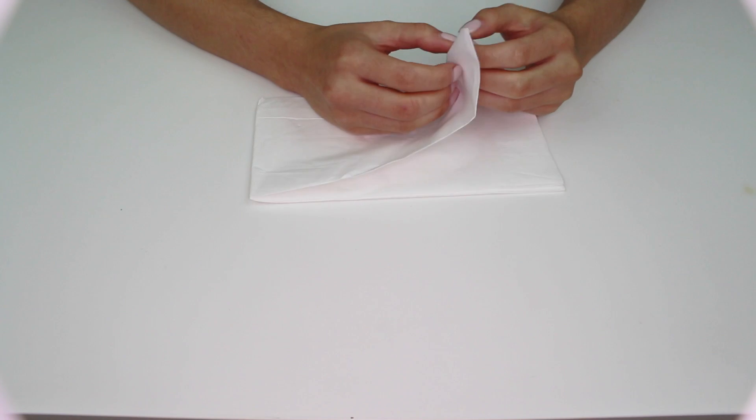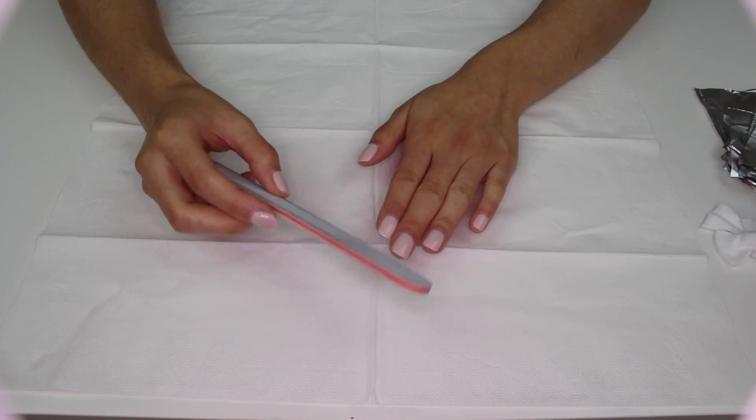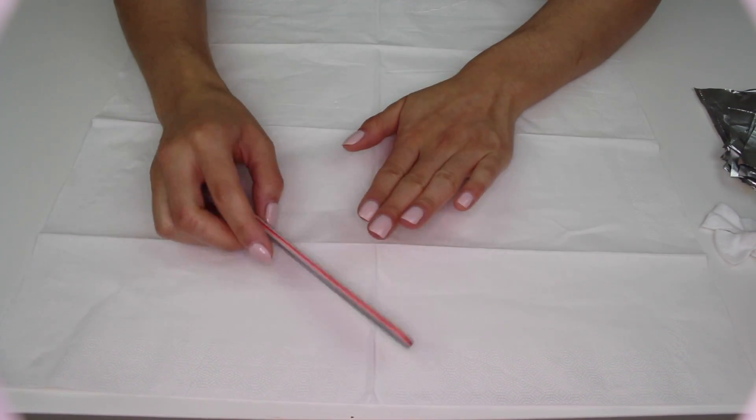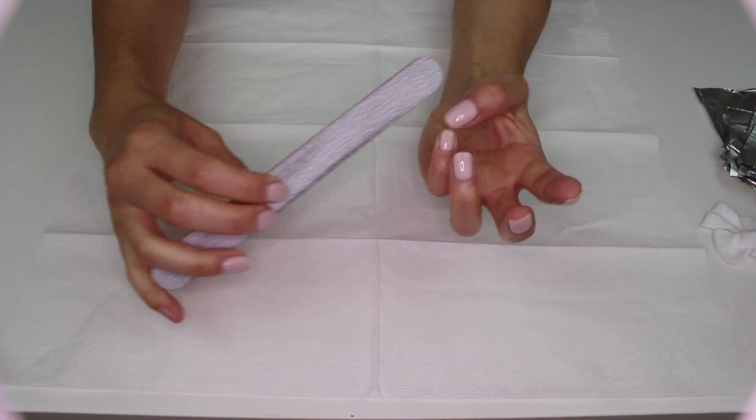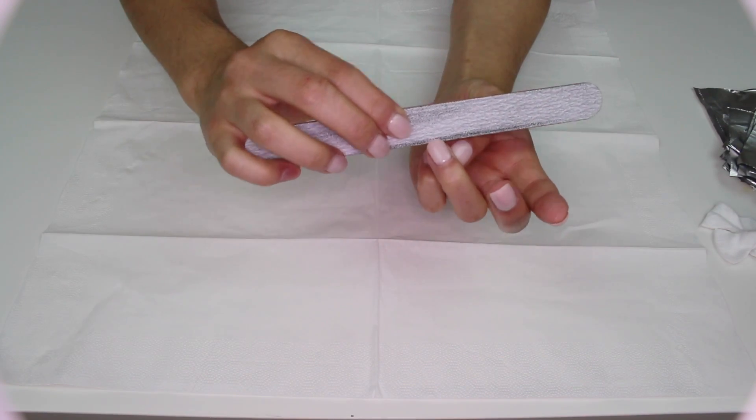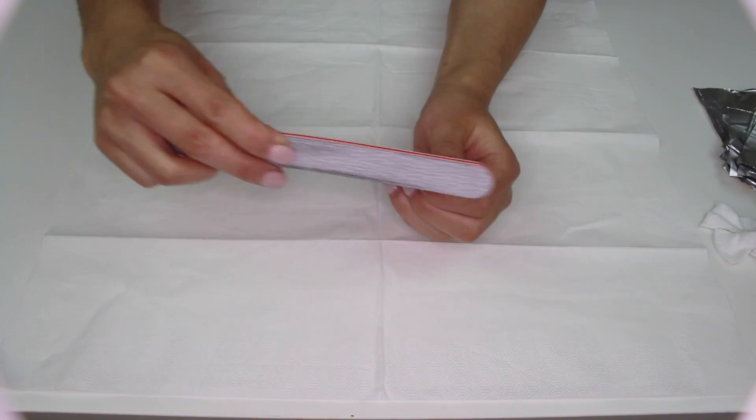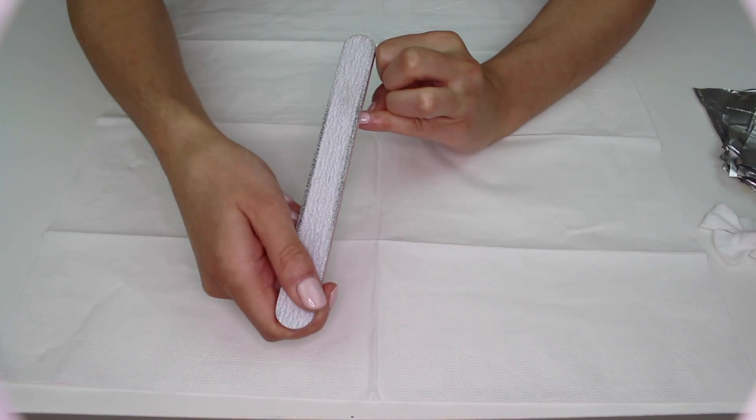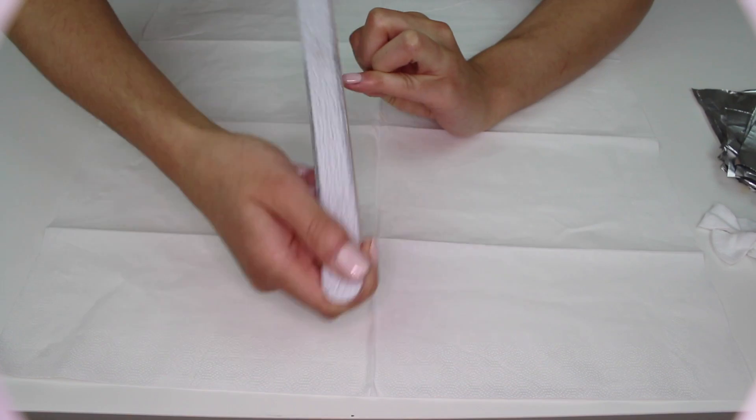Now we can get started on the actual soak off. You want to put a layer of tissue underneath. The first thing you want to do is break the seal. So by that you just file the ends here. And then you also want to break the seal on top, so slightly just file on top of the nail.